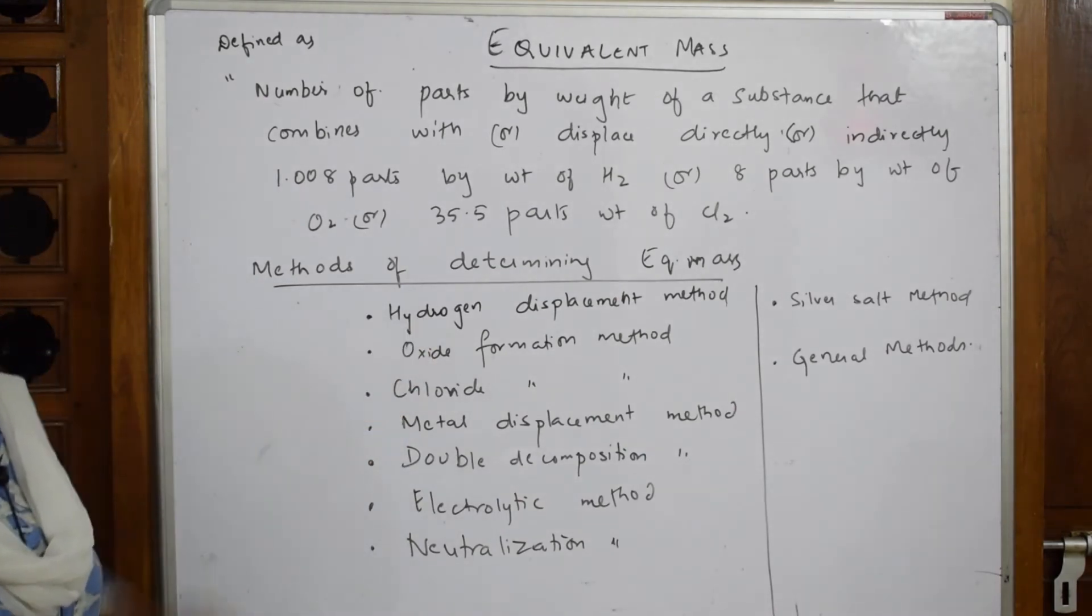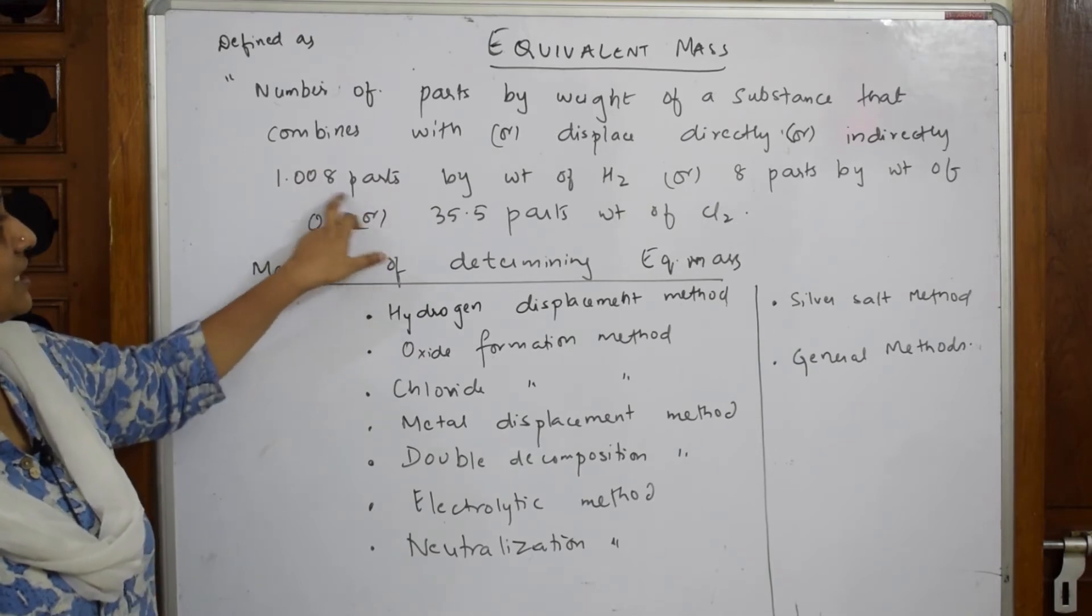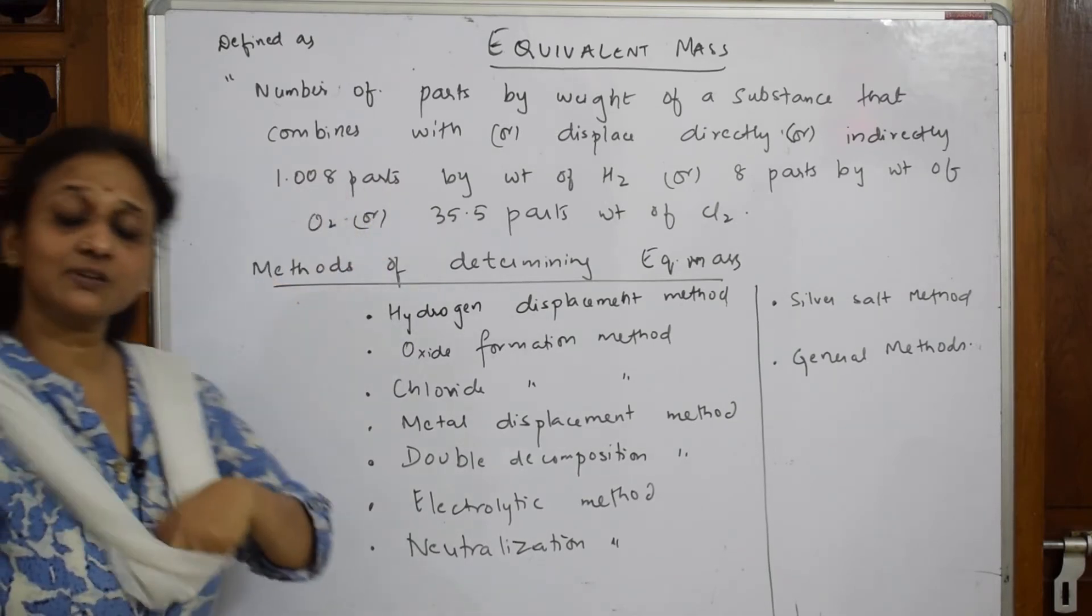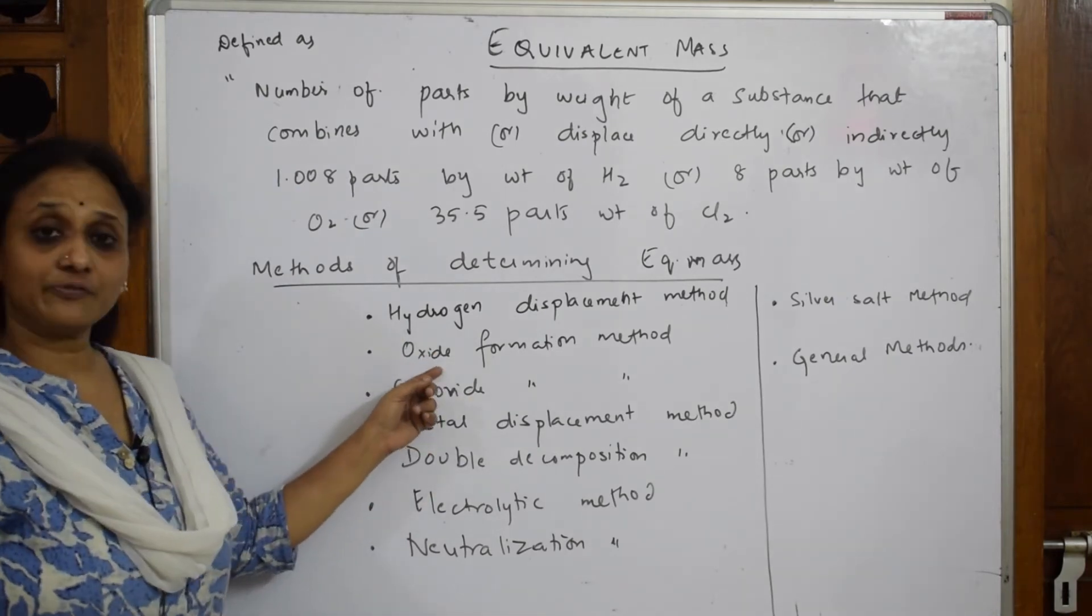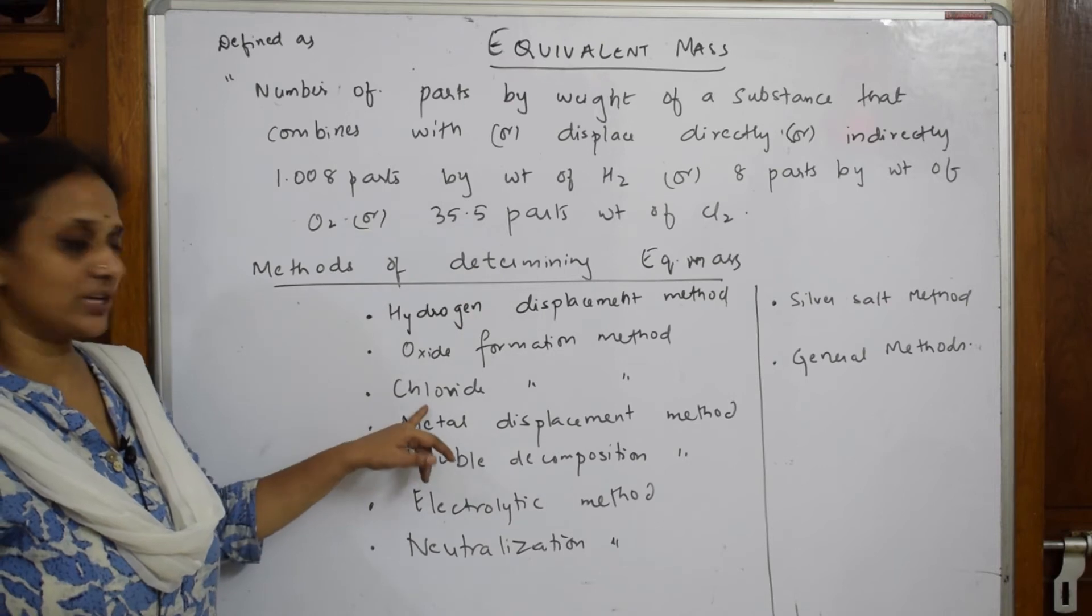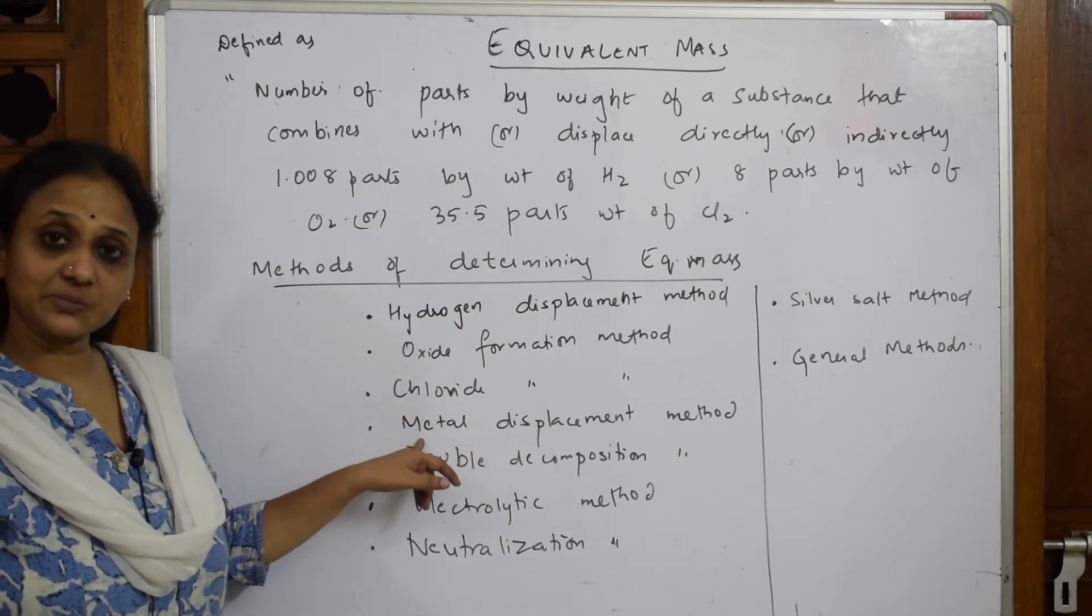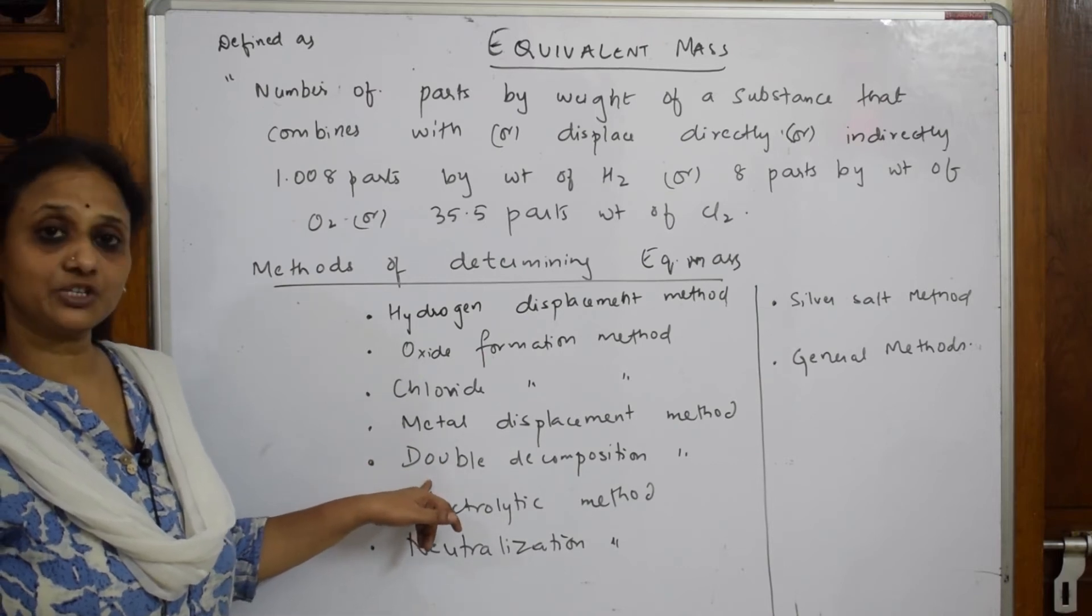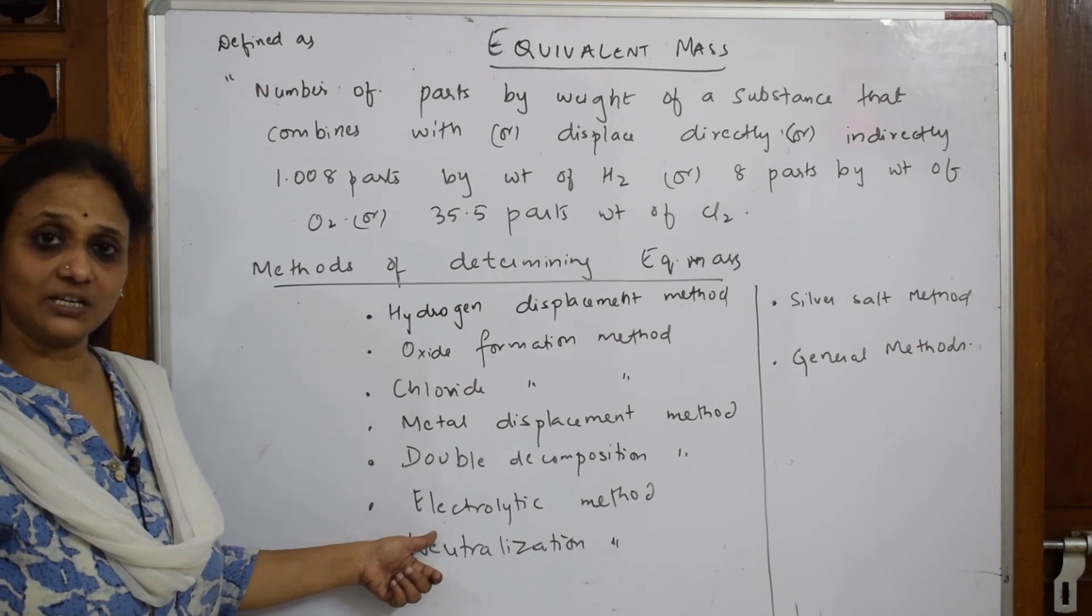So the first method is hydrogen displacement method. This definition is common for this one hydrogen because I said it's going to directly or indirectly displace 1.008 parts of hydrogen. Next oxide formation method. Chloride formation method. I've taken this chloride displacing. I'll be comparing it in both. Next metal displacement method. Next would be double decomposition method.